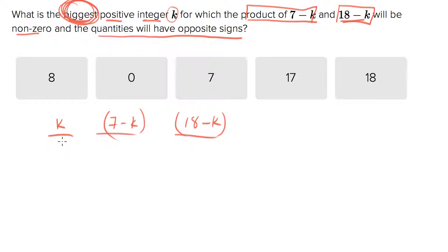Let's try the simplest one—plug in 1 for k. We'll get 7 minus 1 is 6, and 18 minus 1 is 17. Let's check all the rules. Was k a positive integer? Yes. Did we track the product? Should we track 7 minus k? Yes. Do we track 18 minus k? Yes. Is the product of those non-zero? Six times 17 is some non-zero number, so we meet that standard.